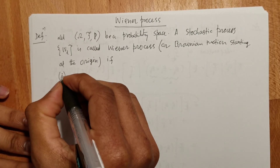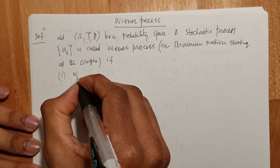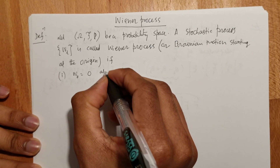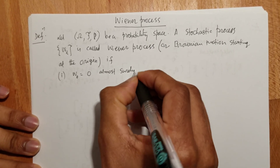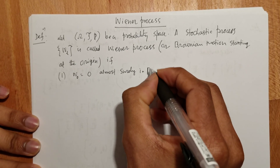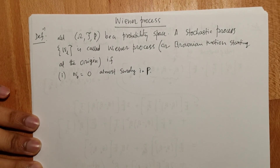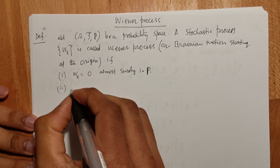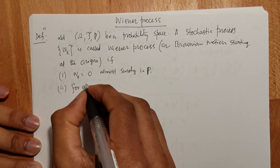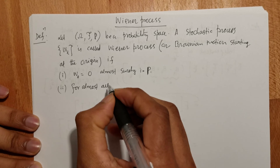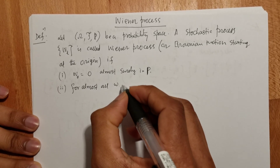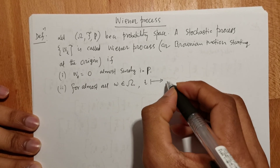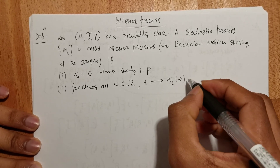The first condition: W₀ = 0 almost surely. The second condition: for almost all ω in Ω, the map t → Wt(ω) is continuous.